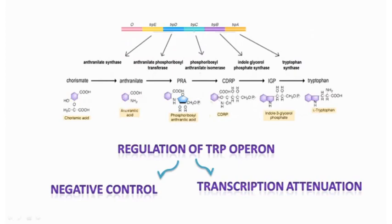The genes trpE, D, C, B, and A synthesize a polycistronic mRNA from which five different enzymes are produced: anthranilate synthase, anthranilate phosphoribosyl transferase, phosphoribosyl anthranilate isomerase, indole glycerol phosphate synthase, and tryptophan synthase. By this five-step process, chorismate or chorismic acid is finally converted into tryptophan. We are concerned here with the regulation of this trp operon.